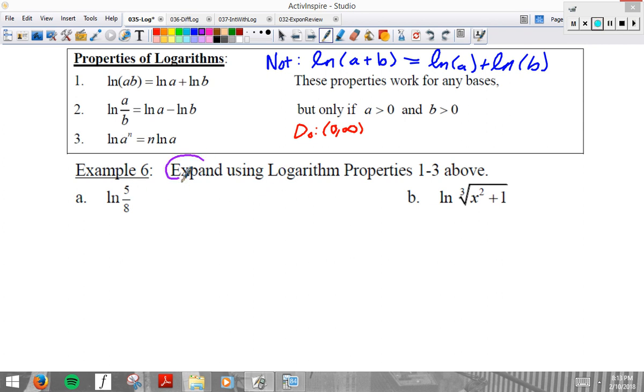Here we go. Alright. Expand. Roughly means to make it more complicated. To use these rules to write this out. You should be able to do both of these using these properties if you pass the prerequisite courses. Three, two, one.